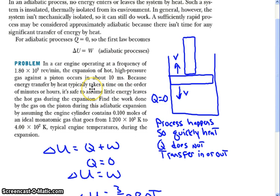Since heat transfer takes a long time, we can consider this an adiabatic process. The question asks us to find the work done by the gas on the piston during this expansion by assuming the engine cylinder contains 0.1 moles of an ideal monatomic gas going from 1200 Kelvin to 400 Kelvin as it expands.